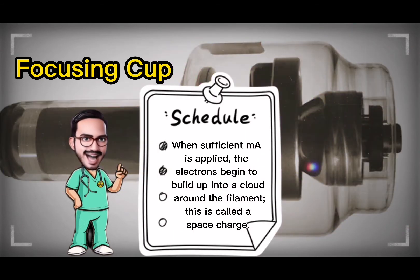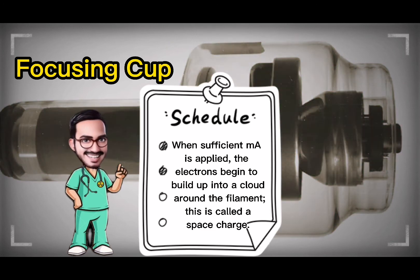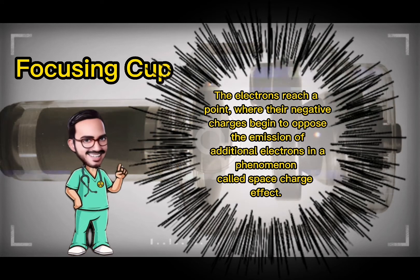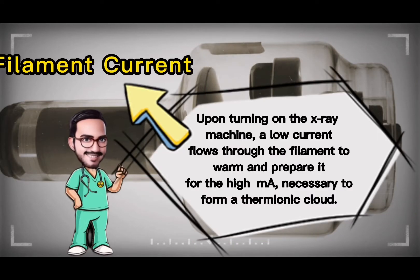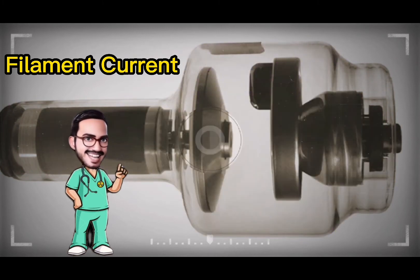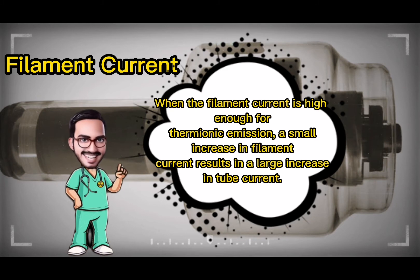When sufficient mA is applied, the electrons begin to build up into a cloud around the filament — this is called a space charge. The electrons reach a point where their negative charges begin to oppose the emission of additional electrons, in a phenomenon called the space charge effect. A low current flows through the filament to warm and prepare it for the high mA necessary to form a thermionic cloud. When the filament current is high enough for thermionic emission, a small increase in filament current results in a large increase in tube current.